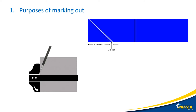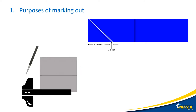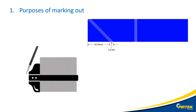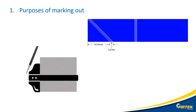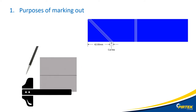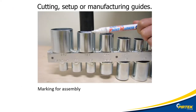Marking out belongs to the measurement group. Measurement and marking out is important to creating accurate work, and it helps speed up setup and manufacture. Marking out can be as simple as marking the insertion depth or cut length of a hose, or more sophisticated and complicated, like marking out a pump casting for machining.